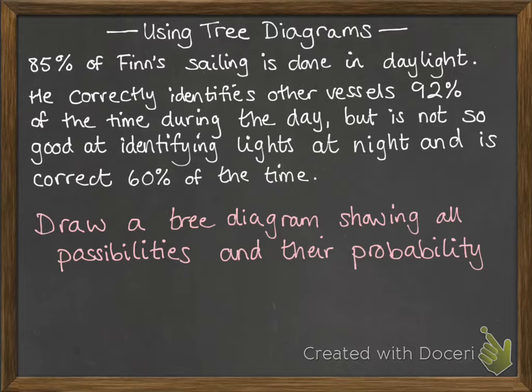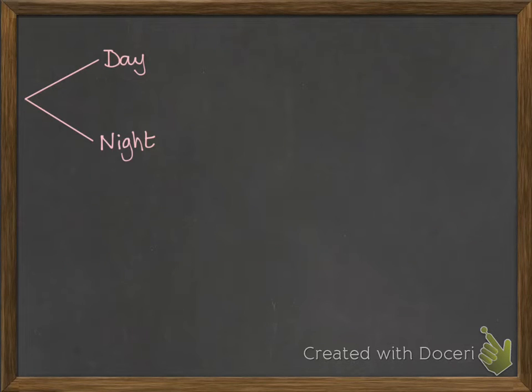Now we're going to draw a tree diagram to show all of the possibilities that could happen on his sailing trips and their likelihood, their probabilities. Okay, so he could either go at day or night.